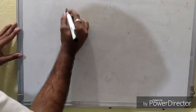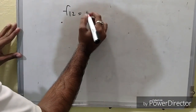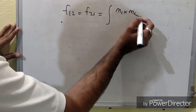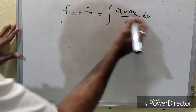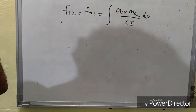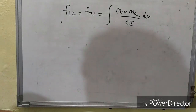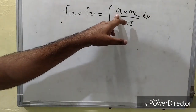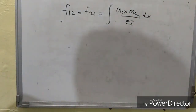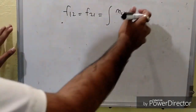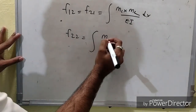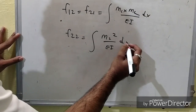The formula for F12, which is also equal to F21, is: ∫ M1 · M2 / EI dx. Here M1 is the bending moment developed due to unit load at coordinate 1, and M2 is the bending moment developed due to unit load at coordinate 2. Similarly, F22 = ∫ M2² / EI dx.